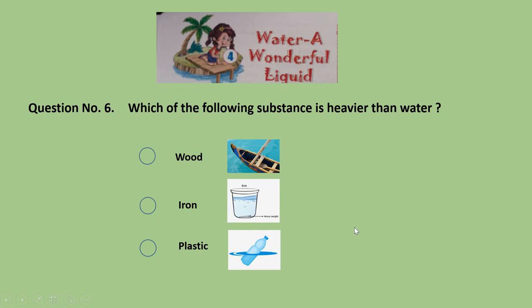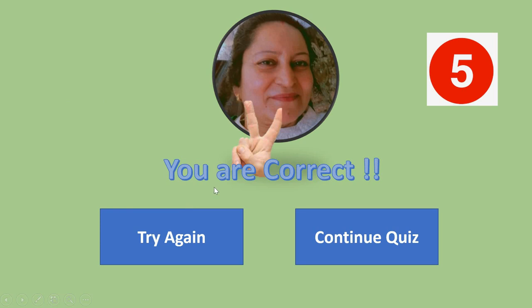Question 6: Which of the following substances is heavier than water — wood, iron, or plastic? You can see plastic is floating, and wood is also not sinking. Let me try iron — correct! Iron is the correct answer. Give yourself 5 marks, and keep track of your total.